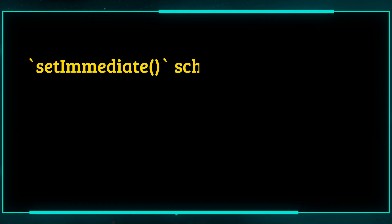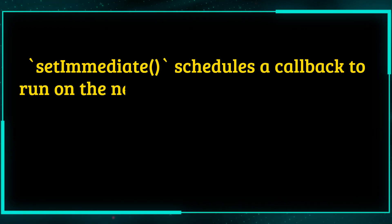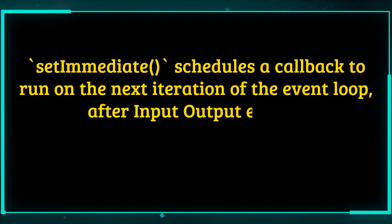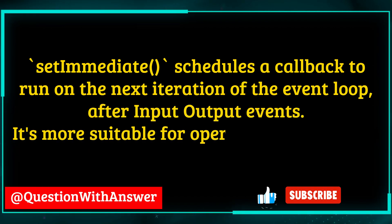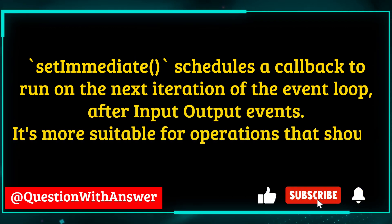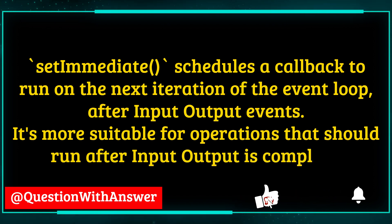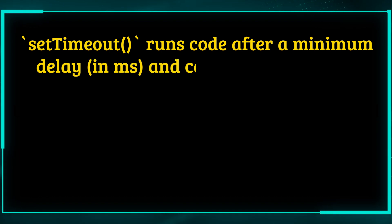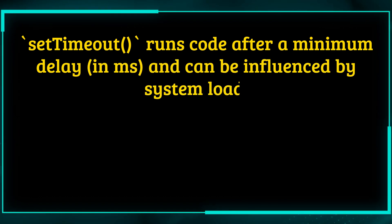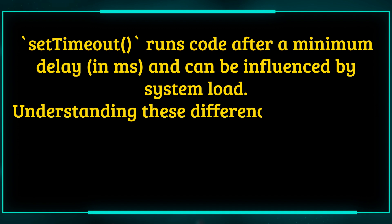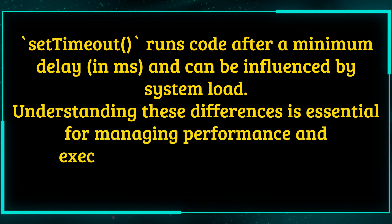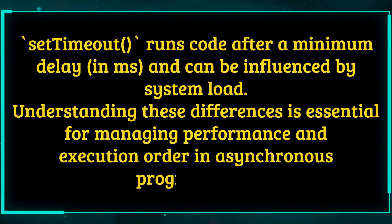setImmediate schedules a callback to run on the next iteration of the event loop, after input-output events. It's more suitable for operations that should run after input-output is complete. setTimeout runs code after a minimum delay in milliseconds, and can be influenced by system load. Understanding these differences is essential for managing performance and execution order in asynchronous programming.